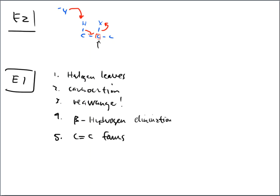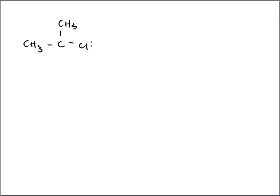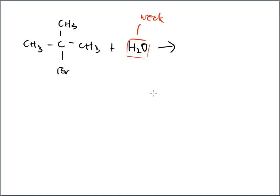Let's do an example problem of E1. We have a carbon with three CH3 groups and a bromo group reacting with H2O. You might think we did this before — we definitely used this reagent before; it's how I introduced E2. The difference, just like with SN2 and SN1, is the type of nucleophile. This nucleophile, water, is very weak, and that helps us figure out which direction the reaction goes.